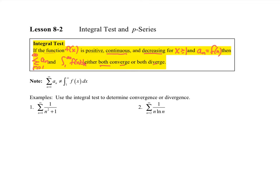They go with each other. Some tests maybe only do one of the two. But in this test, if one converges, the other one will. If one diverges, the other one will.